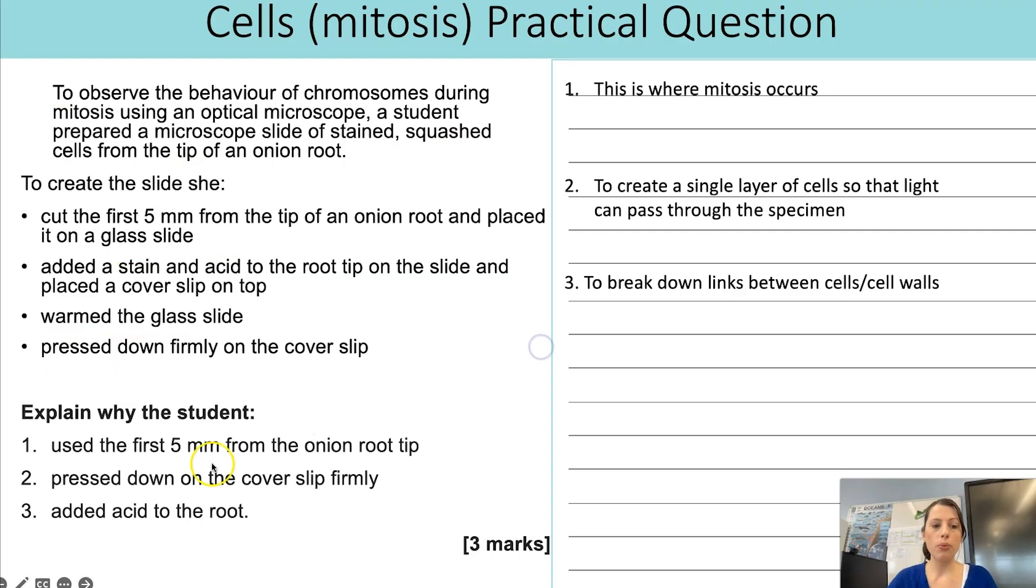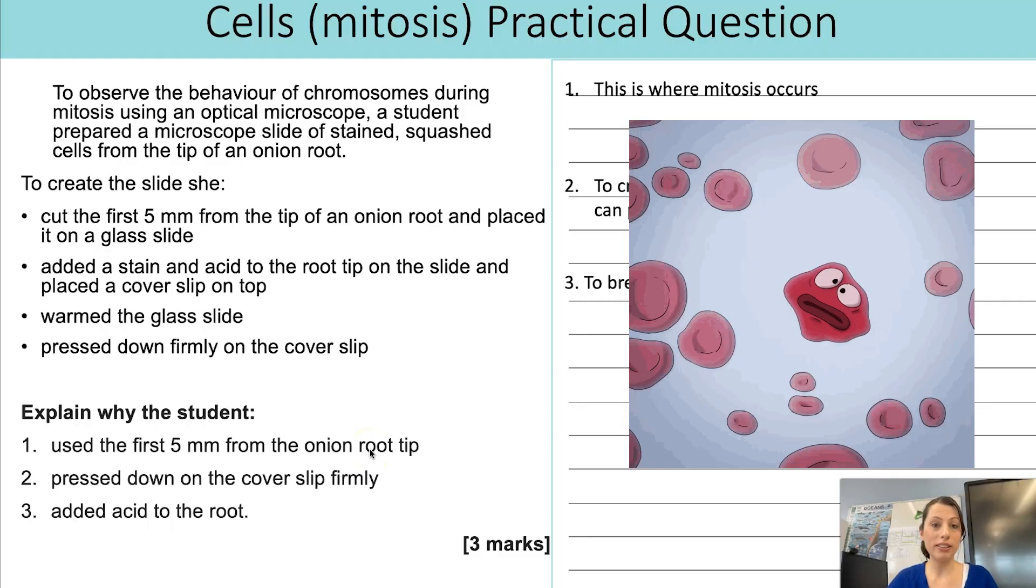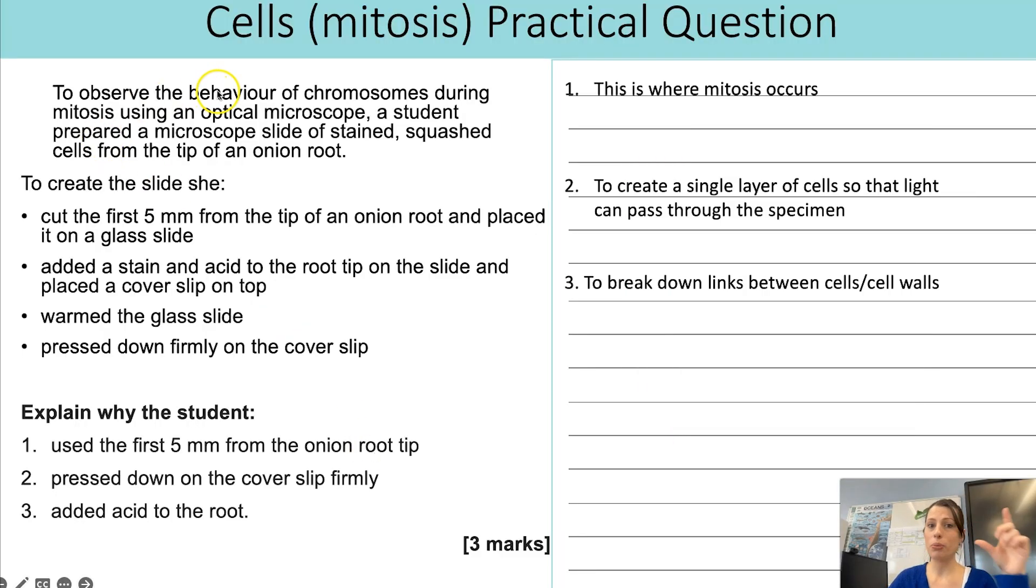The reason that we would use the first five millimeters is right at the tip. That is the place where mitosis occurs. And we just said, we want to look at the behavior of chromosomes during mitosis. So we need to be observing where mitosis occurs. Then we have to say, why do they press down firmly on the cover slip? So this is why it's called a stained squash. You're squashing your sample.